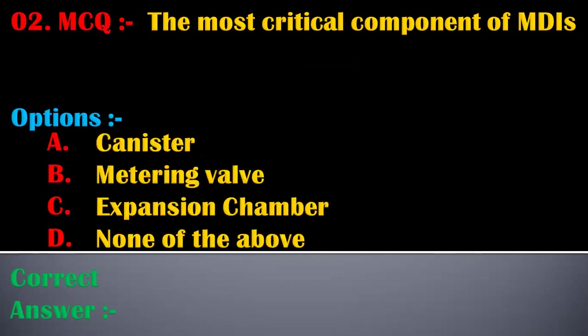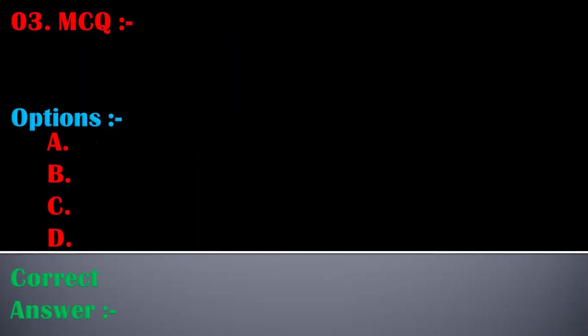The second MCQ is: the most critical component of MDIs — options are: A) canister, B) metering valve, C) expansion chamber, D) none of the above. The correct answer is B, metering valve. The most critical component of MDIs is the metering valve.